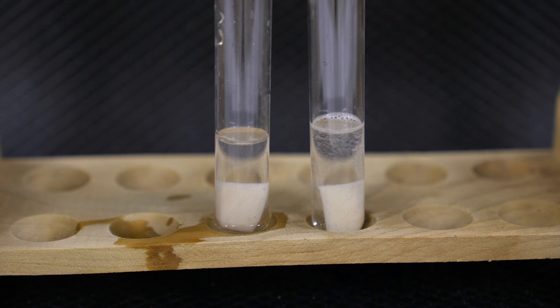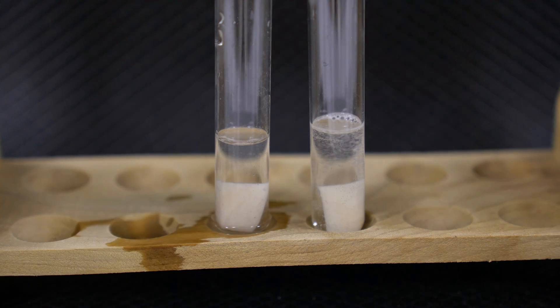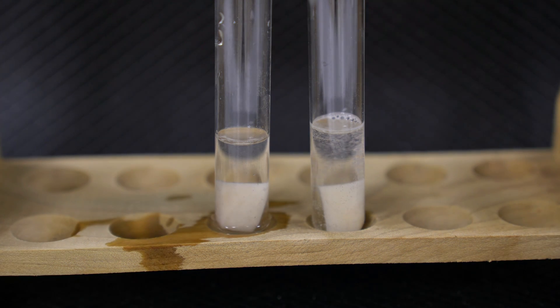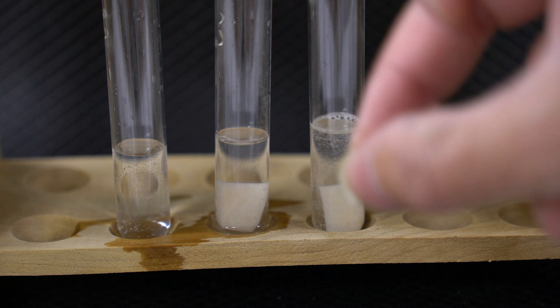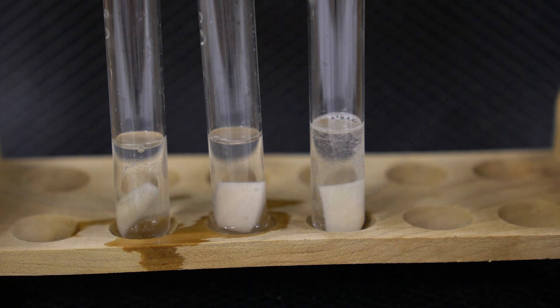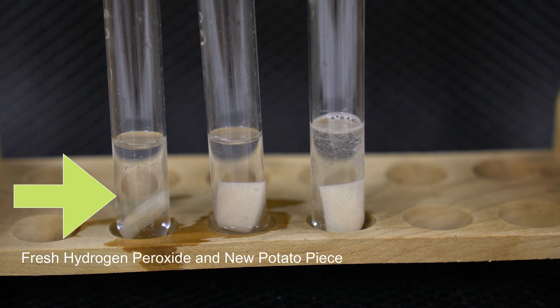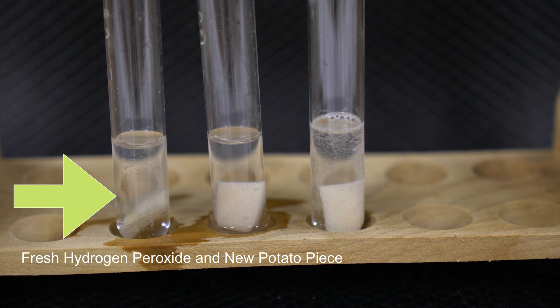So for comparison purposes, if I take that fresh 4 mL of hydrogen peroxide and a brand new fresh potato and add it there, we can see the difference now in reaction rate. It takes just a couple seconds to get going, but we are noticing definitely more bubbles being produced here with the fresh potato and fresh hydrogen peroxide compared to the potato that already went through a reaction.